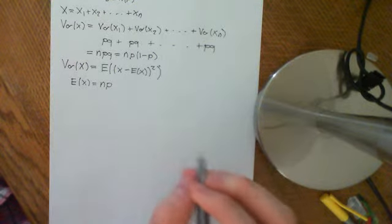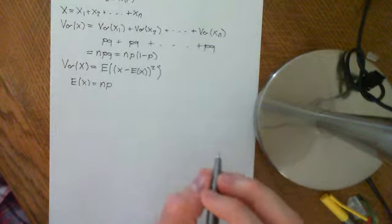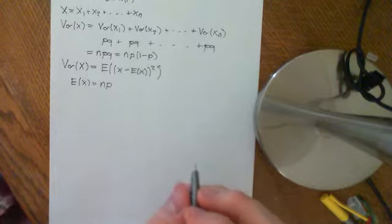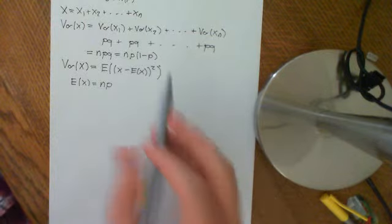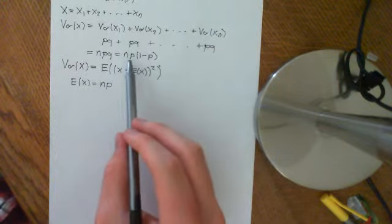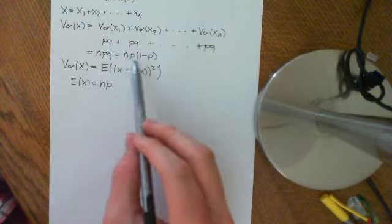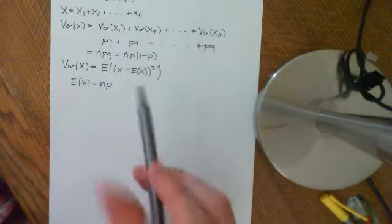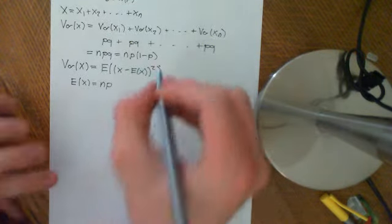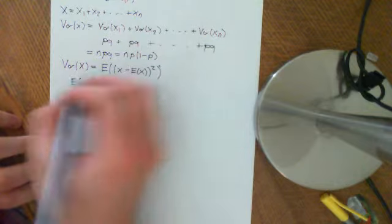Welcome to part 2 of this video on the variance of the binomial distribution. Before the break I showed you that the variance of the binomial distribution is in fact mpq, or mp times 1 minus p. And now I'm going to give you a second argument for why that's true.